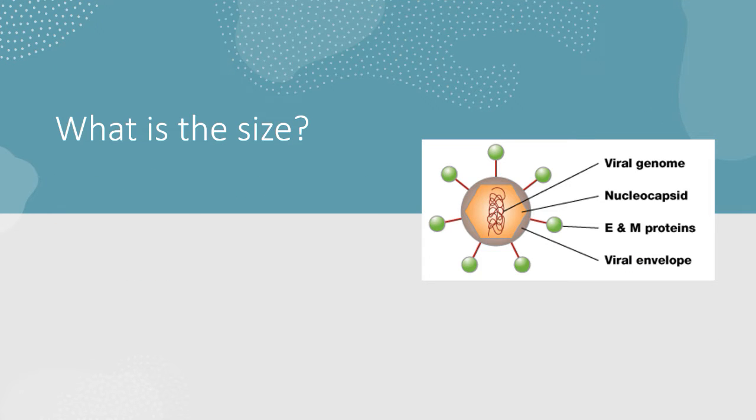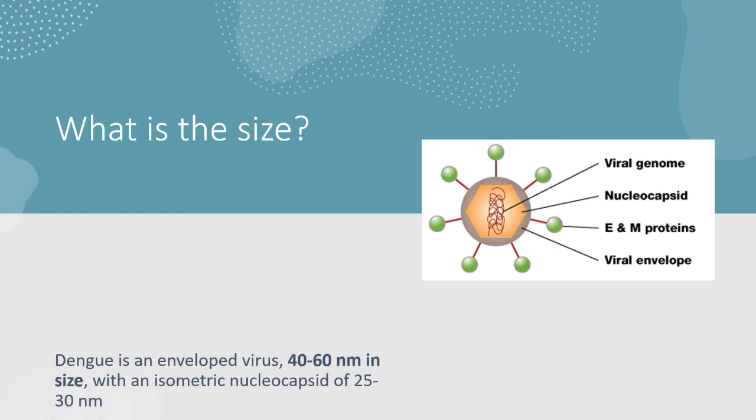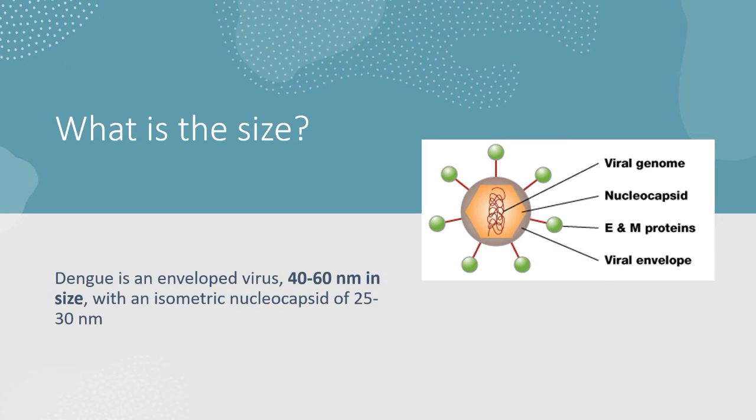What is the size of dengue virus? Dengue virus is an enveloped virus, and it has a 40 to 60 nanometer size. It's an isometric nucleocapsid and the nucleocapsid itself is 25 to 30 nanometers, and including all the protein layers and the envelope, it becomes 40 to 60 nanometers in diameter.